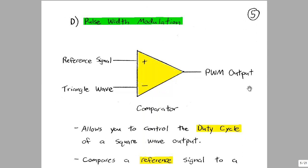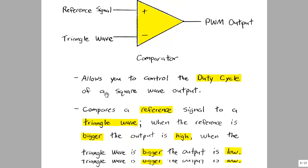So the other concept we're going to use is pulse width modulation. So this uses a comparator and takes a reference signal on a triangle wave and uses that information to create a pulse width modulated output. So basically what this is doing is it allows you to control the duty cycle of a square wave output. So the reference signal and the triangle wave are compared. And when the reference signal is bigger than the triangle wave, the output is high. On the other hand, when the reference signal is smaller than the triangle wave, the output is low.